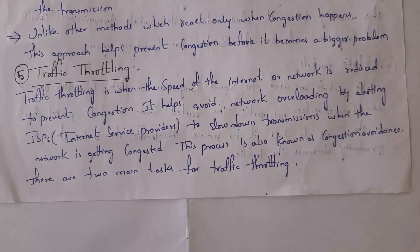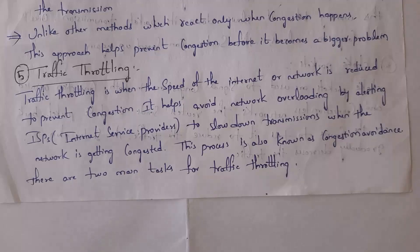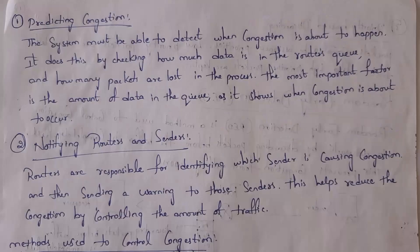The fifth congestion control technique is traffic throttling. In traffic throttling, whenever congestion occurs, the speed of the network is decreased. For example, whenever the network is overloaded, Internet Service Providers like ACT, Airtel, or BSNL will get an alert message. Whenever they receive the alert message, they will slow down the internet speed before congestion occurs. Data will then reach the receiver very slowly, so congestion will be avoided. Traffic throttling is also known as congestion avoidance technique.